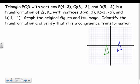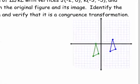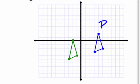I look at PQR - I got that graphed over here in blue. So I had P(4, 2), I had Q(3, -3), and I have R(5, -2). And then for my green guy, the new image JKL, J is at (-2, 0), K is at (-3, 5), and L is at (-1, 4).